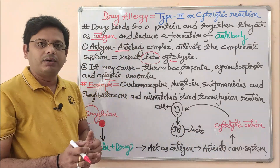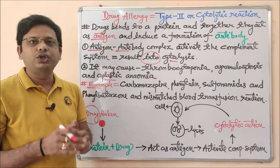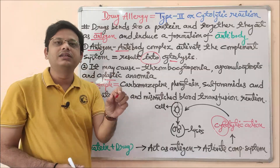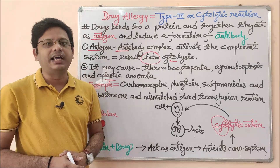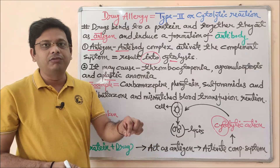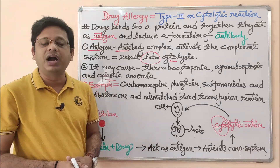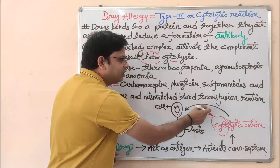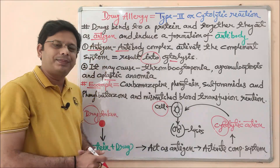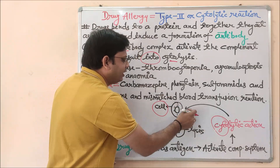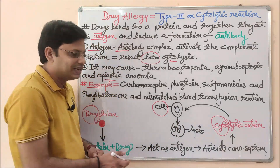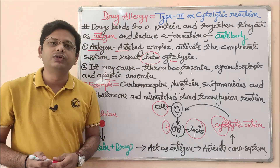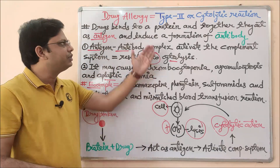After this antigen is formed, it will activate the complement system in our body. When the complement system is activated, there is a process called cytolytic reaction, where lysis of cells takes place. Whenever there is lysis of a cell, there is malfunction of the associated part, and that can convert into an unwanted reaction. After cytolytic reaction, the cell is lysed and is no longer available for its normal physiological activity.